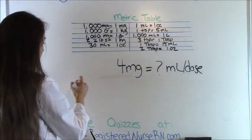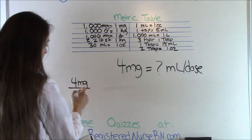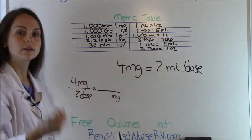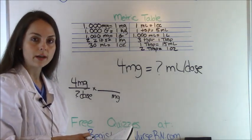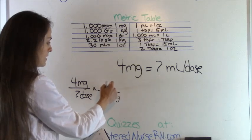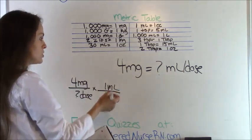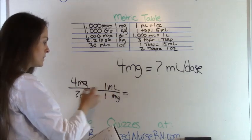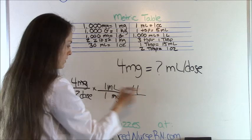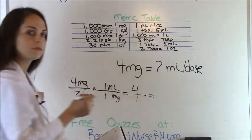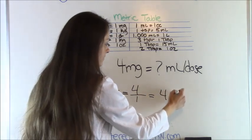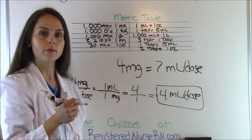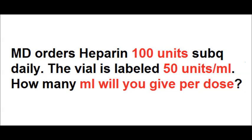We set up the problem starting with what the doctor ordered: four milligrams. We want to know how many milliliters per dose. Using dimensional analysis, we work diagonally — move milligrams down. The vial is labeled one milligram per ml, so one milligram per one ml. Milligrams cancels out. Four times one is four, divided by one is four — so the answer is four milliliters per dose.